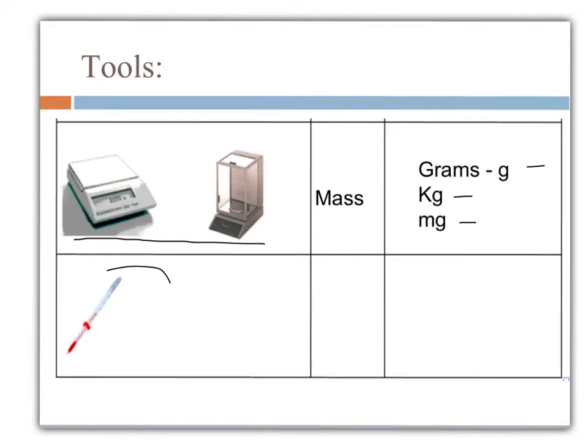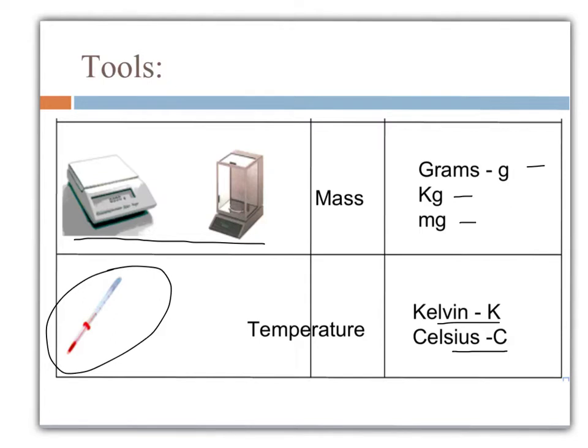We also have a thermometer, which, as you probably know, is a way to measure temperature. In chemistry, we'll be using primarily two systems of measurement for temperature. They include the Kelvin scale, abbreviated with a K, and the Celsius scale, abbreviated as C. They actually are the same scale as we'll see, it's just that they have different starting points.